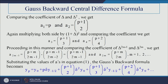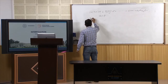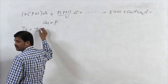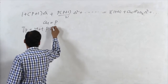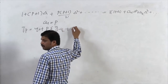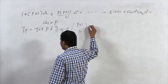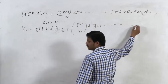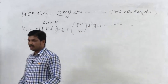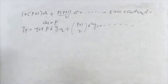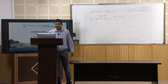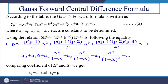Putting all these coefficients A₁, A₂, A₃ together, the Gauss backward difference formula is: Yₚ = Y₀ + p·ΔY(−½) + C(p+1, 2)·Δ²Y₀ + ...